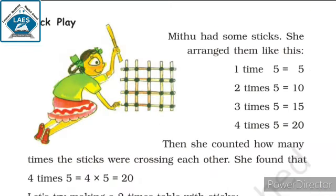Stick play. Meetu had some sticks. She arranged them like this. One time 5 is equal to 5. 2 times 5 is equal to 10. 3 times 5 is equal to 15. 4 times 5 is equal to 20. Then she counted how many sticks were crossing each other. She found that 4 times 5, 4 times 5 is equal to 20.